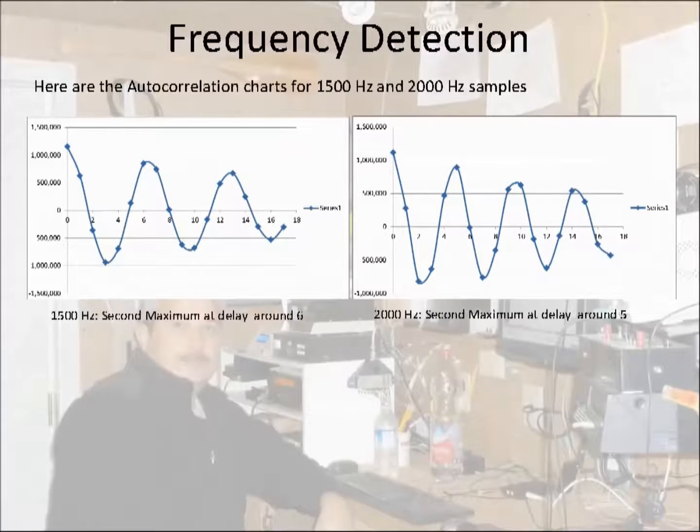To further illustrate my point about how autocorrelation could be used to detect frequencies, here's an autocorrelation showing a 1500 hertz and a 2000 hertz signal. And you can see the maximum for the 1500 hertz signal is around 6 and the maximum for the 2000 hertz signal is around 5.